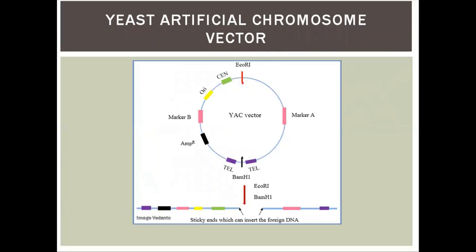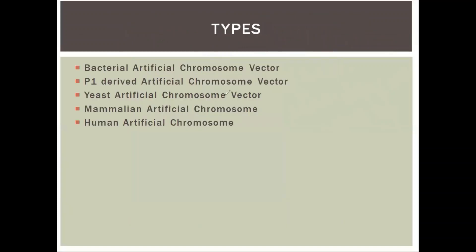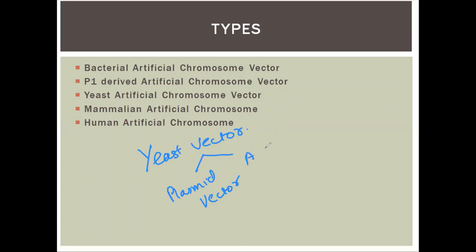Now, the Yeast Artificial Chromosome (YAC) — the East Artificial Chromosome. Yeast vectors are of two types: one is a plasmid vector, and another is an artificial chromosome vector. The YAC is discussed in the next video in more detail.